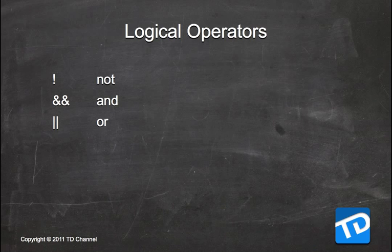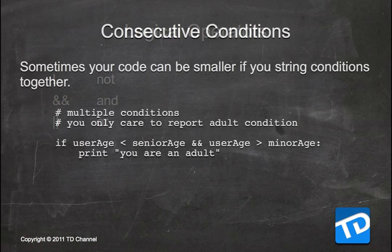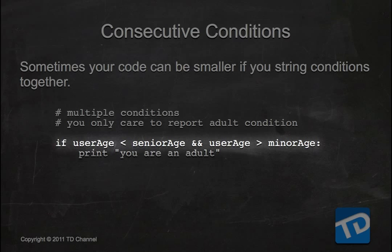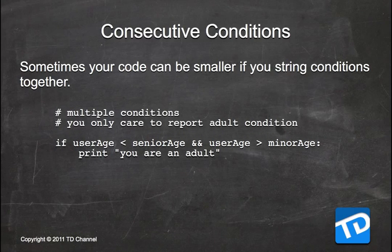Let's look at logical operators. These are operators that allow you to concatenate different evaluations to see if you can proceed to the next part of the code block. Sometimes your code can be much smaller if you string conditions together. Using multiple conditions with the double ampersand (&&), which means AND: if user_age is less than senior_age AND user_age is greater than minor_age, then print 'you are an adult,' because user_age satisfies both conditions — it has to be less than senior and greater than minor.